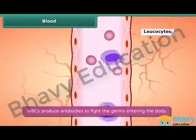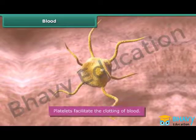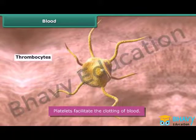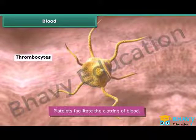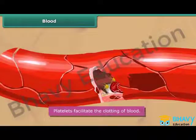Platelets are also known as thrombocytes. They are oval in shape and facilitate the clotting of blood.